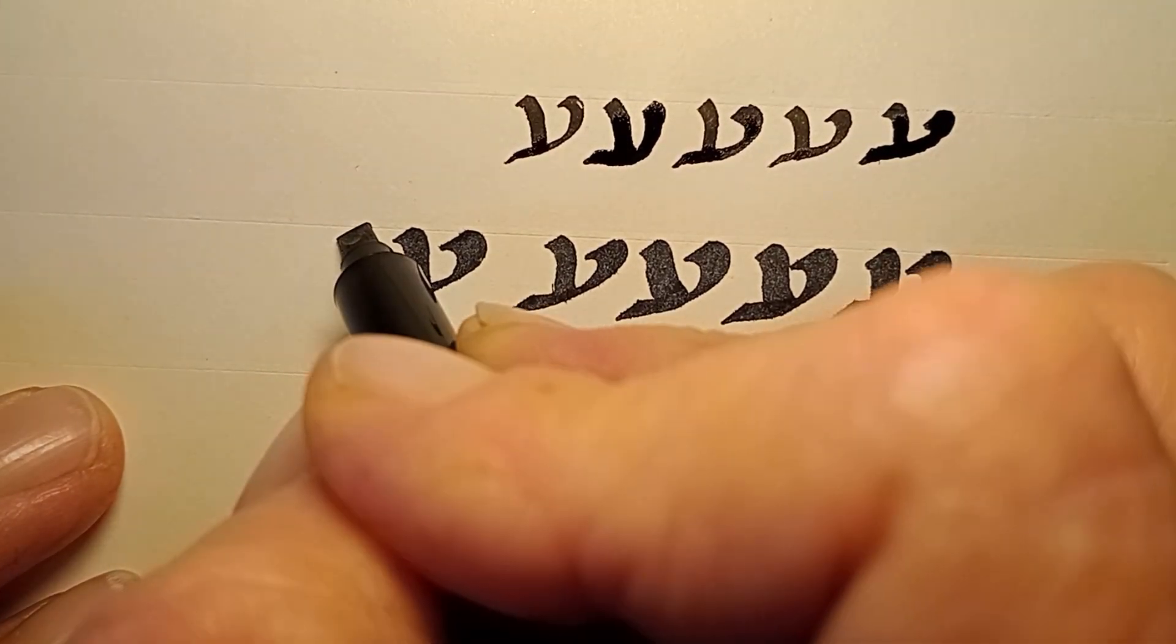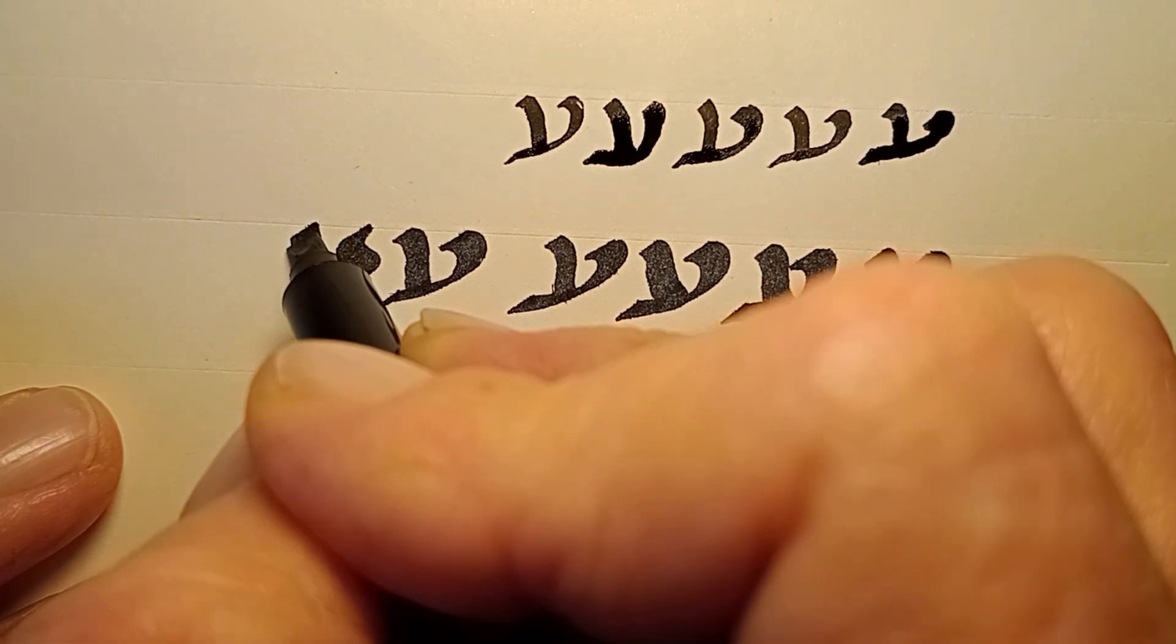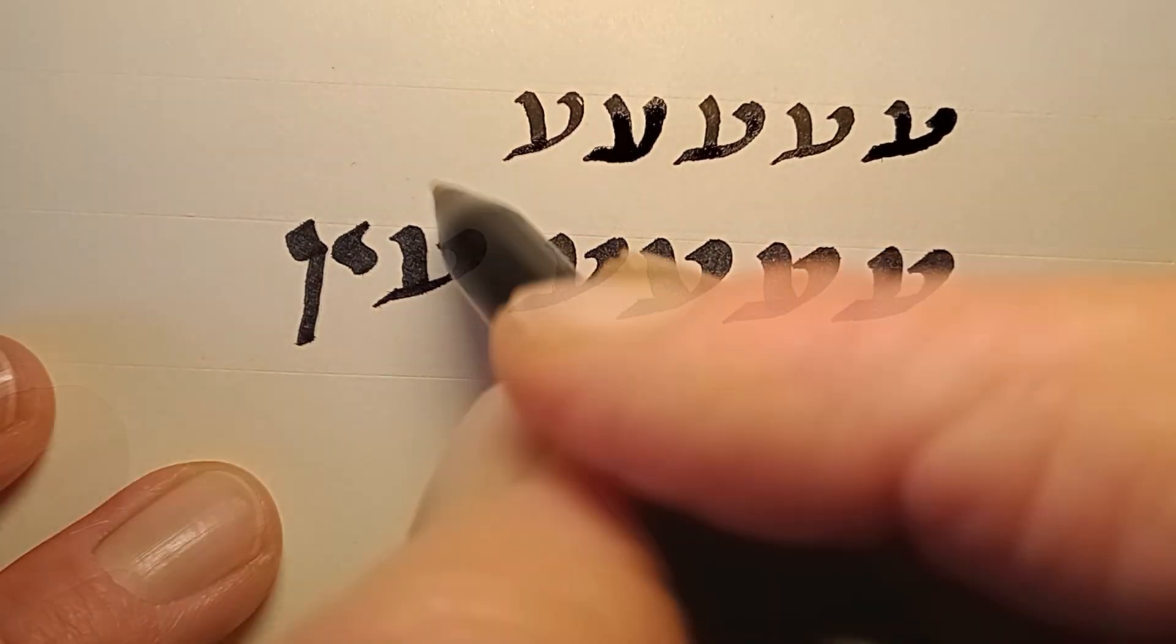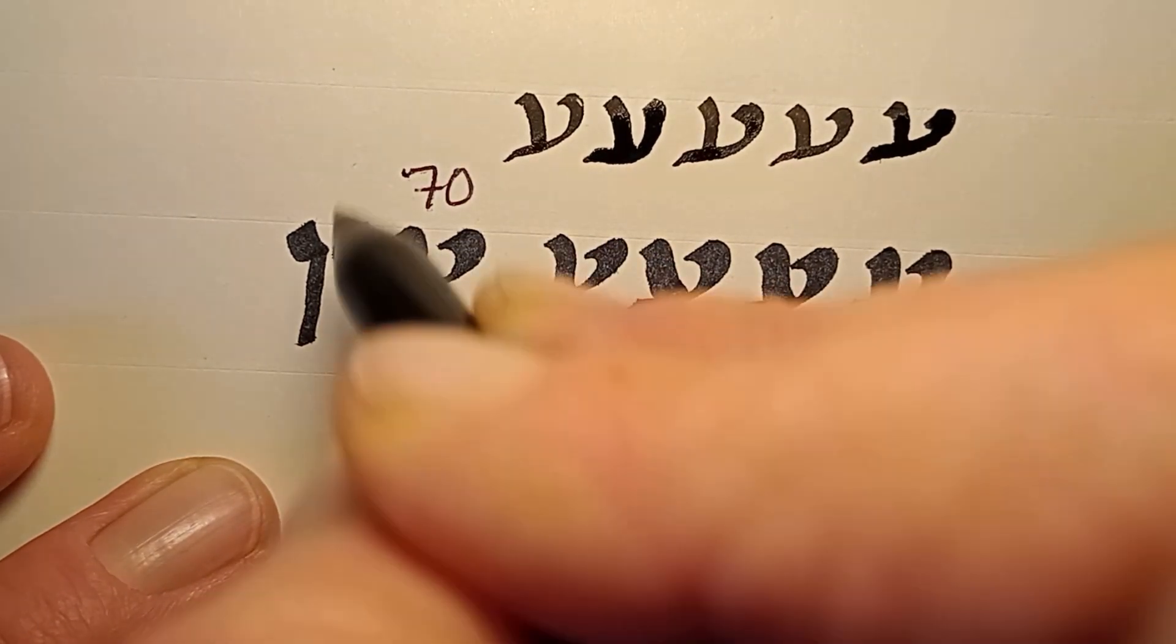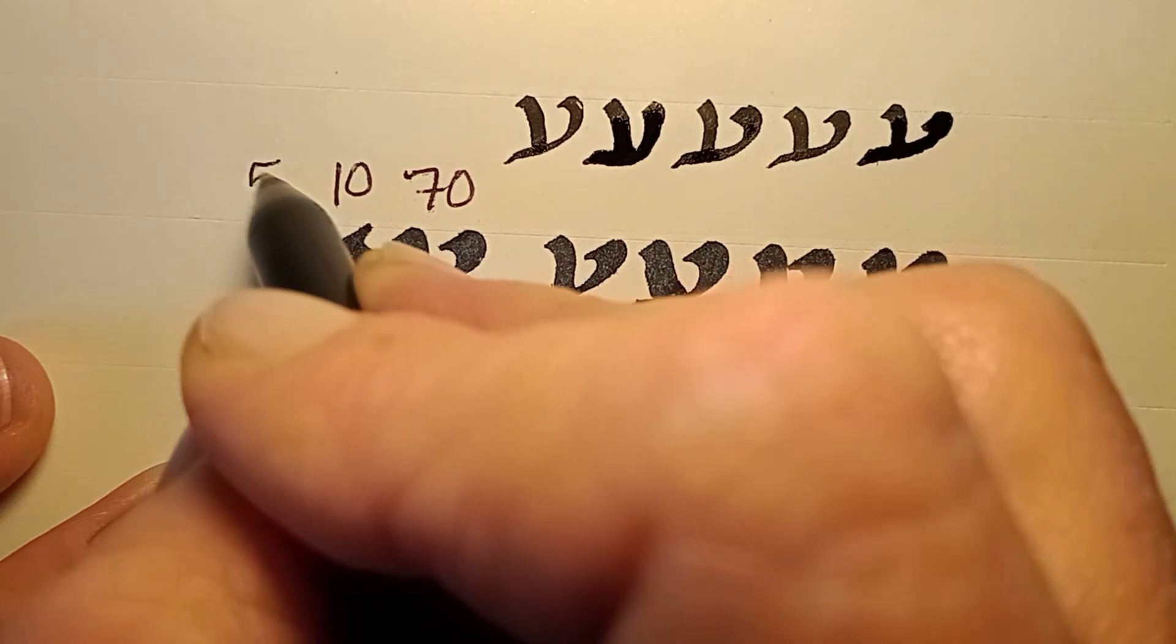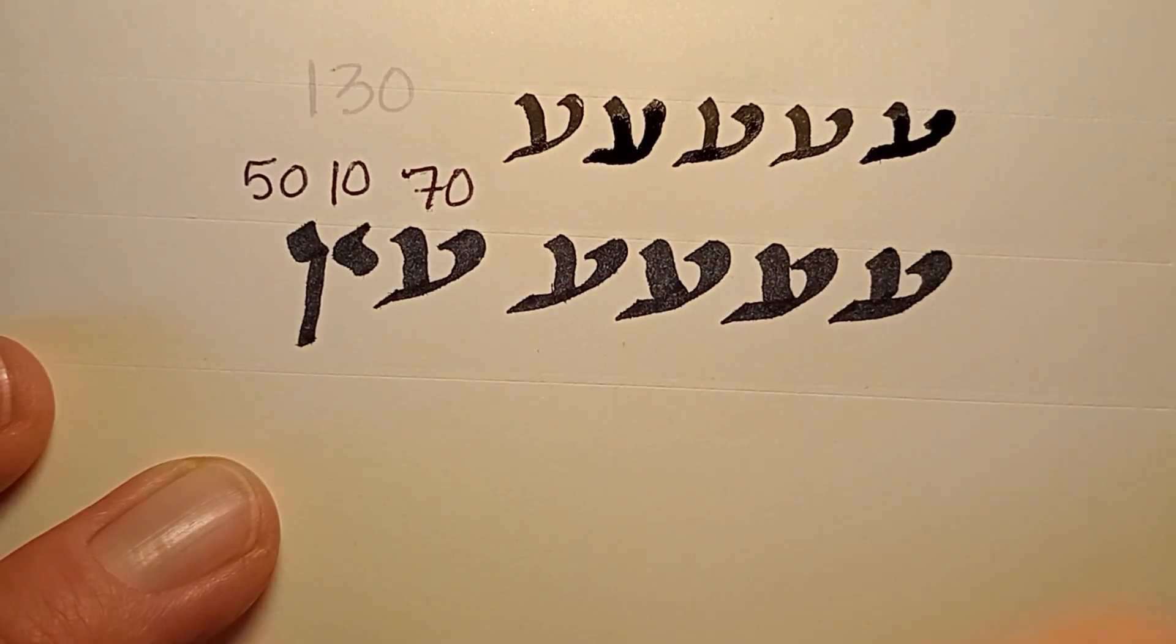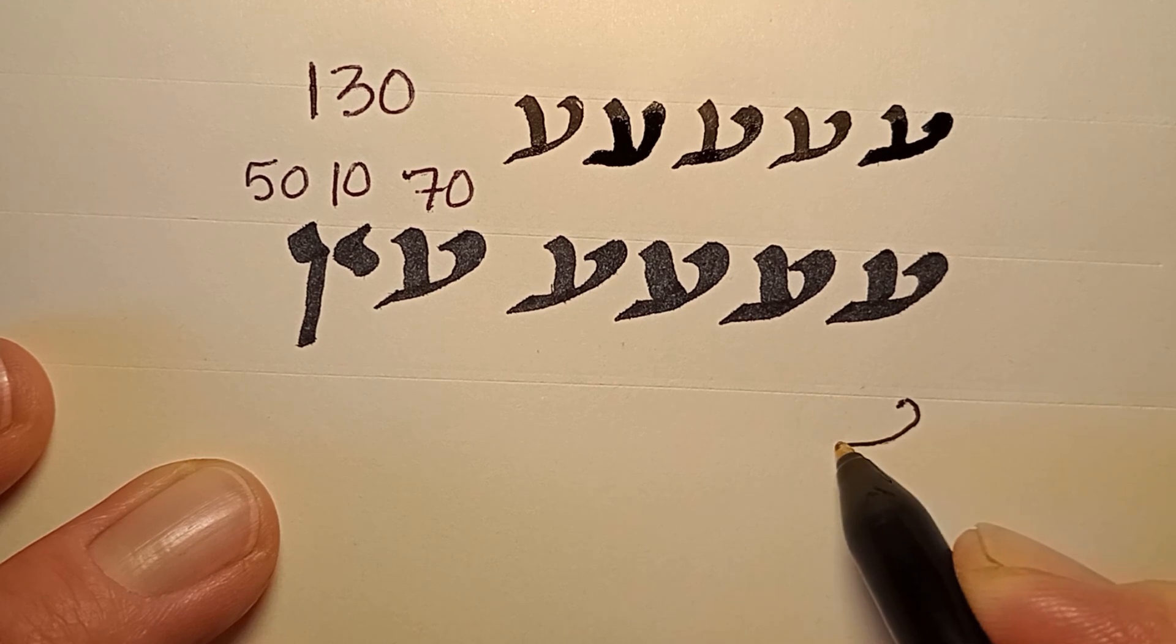So we have ayin, yod, nun sofit. That spells the word ayin. Ayin has a value of 70, yod is 10, nun sofit is 50, for a total of 130 gematria value for ayin as a word.